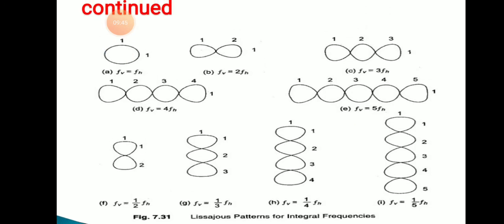In the frequency measurement diagram examples: first diagram ratio 1:1 gives F equals FH. Second gives F equals 2FH, with horizontal tangents 2 and vertical tangents 1. Similarly, F equals 3FH has horizontal tangents 3 and vertical tangents 1. Continuing: F equals 4FH, F equals 5FH. For F equals 1/2 FH, vertical tangents are 2 and horizontal tangents are 1. Similarly F equals 1/3 FH, 1/4 FH, and 1/5 FH.